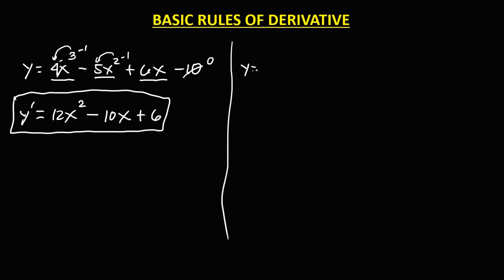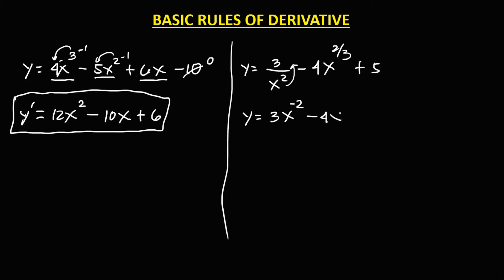For y equals 3 over x squared minus 4x to the power 2 over 3, plus 5, we first need to rewrite by bringing up the exponent. So y equals 3x to the power negative 2, minus 4x to the power 2 over 3, plus 5. The derivative of 3x to the power negative 2: negative 2 times 3 gives negative 6, then x to the power negative 2 minus 1, that's negative 3.